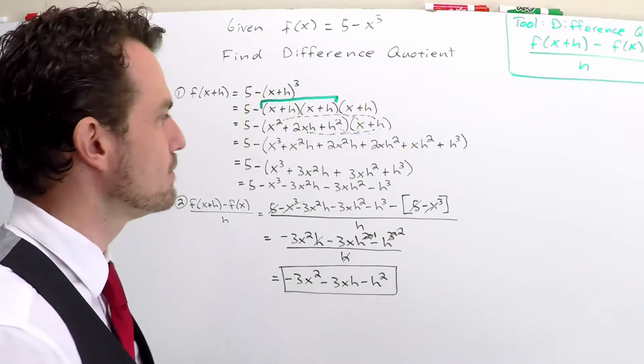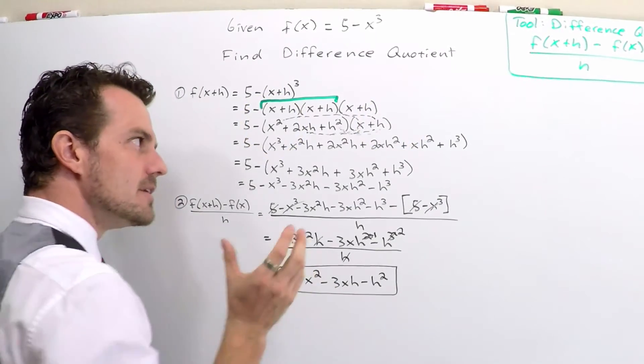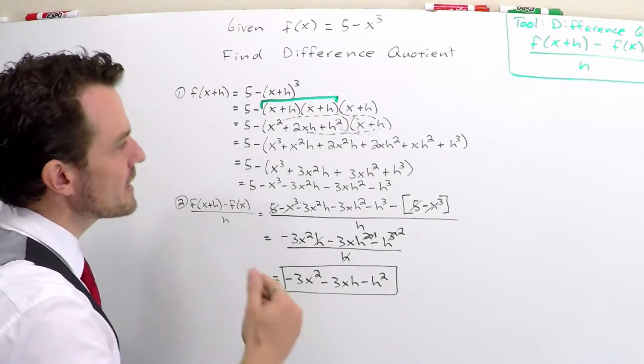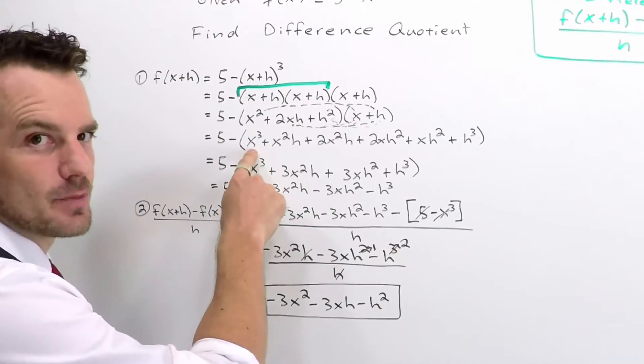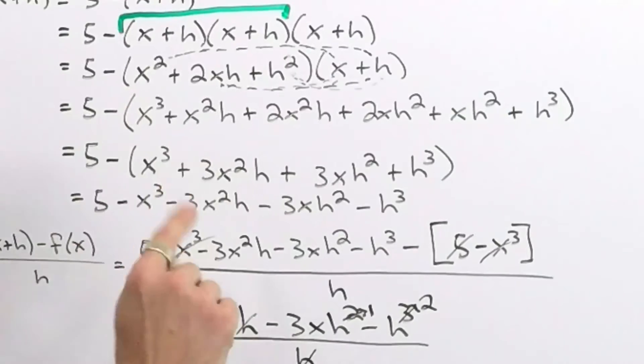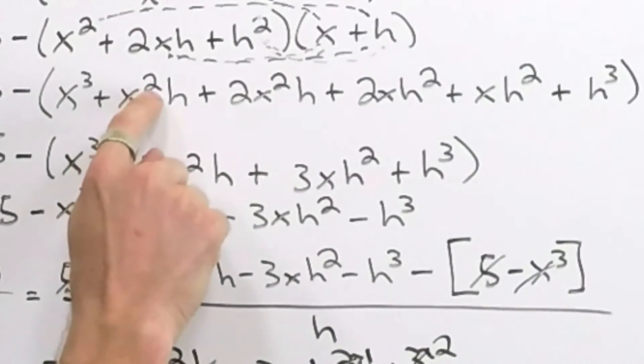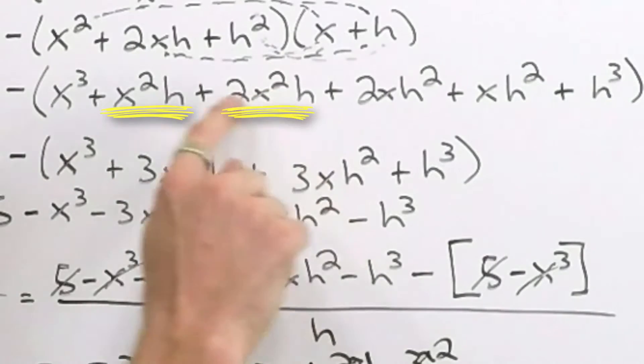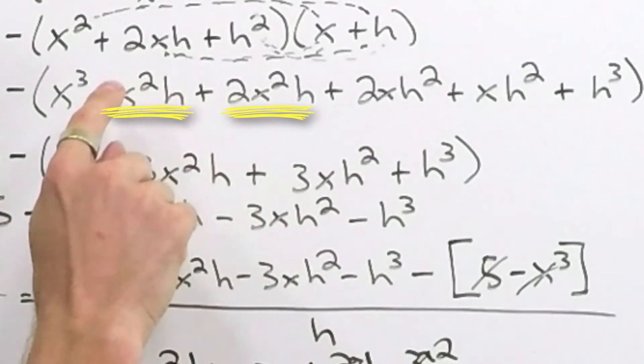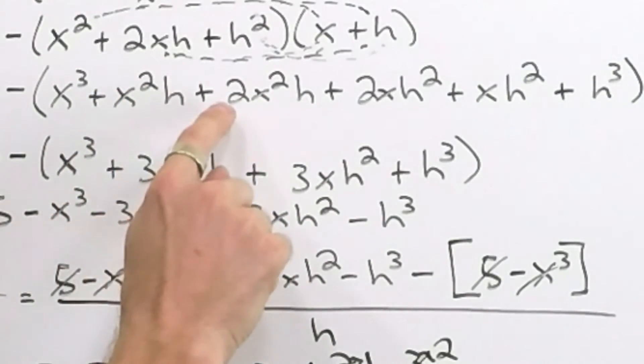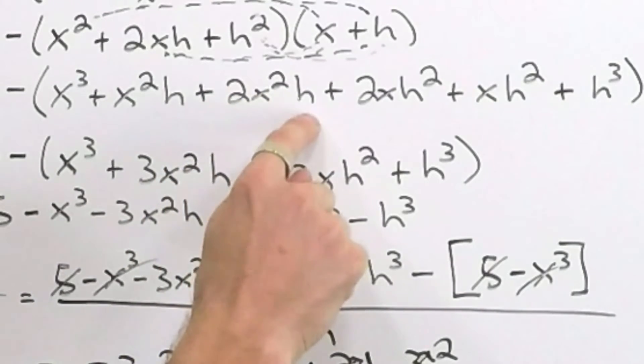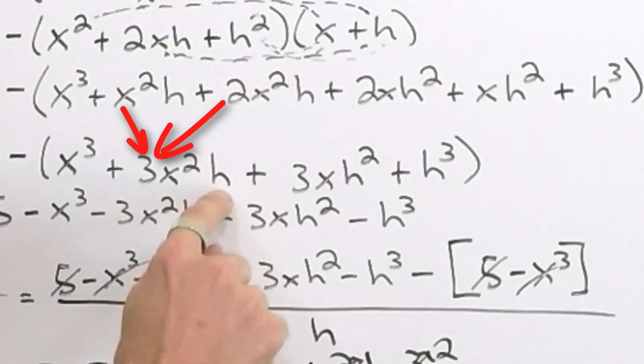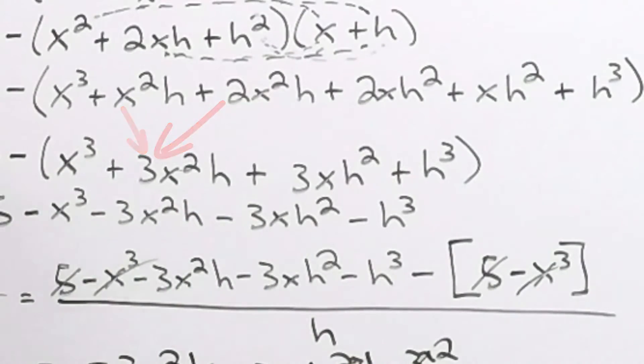Kind of long, kind of lengthy, but it got us there. Now we need to combine anything that's similar. So we go and look. x cubed is by itself. But is there something that has an x squared and an h? Well, yeah, the next piece is x squared and h. There's two of them. So this one x squared h adds together with the two x squared h's to give us a total of three x squared h's.